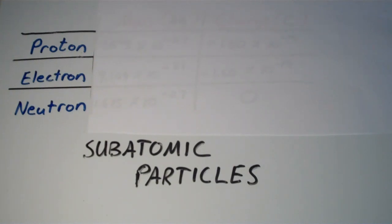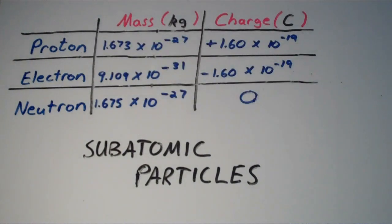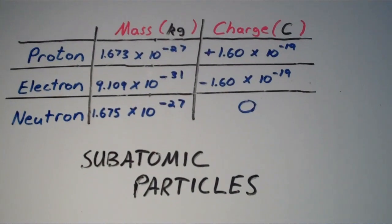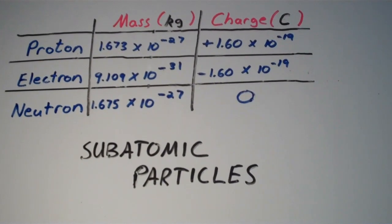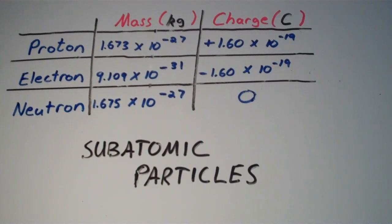But in this video, we're just going to go over the three main subatomic particles: protons, electrons, and neutrons. So in this table, we have the relative masses and charges, electrical charges, of protons, electrons, and neutrons.